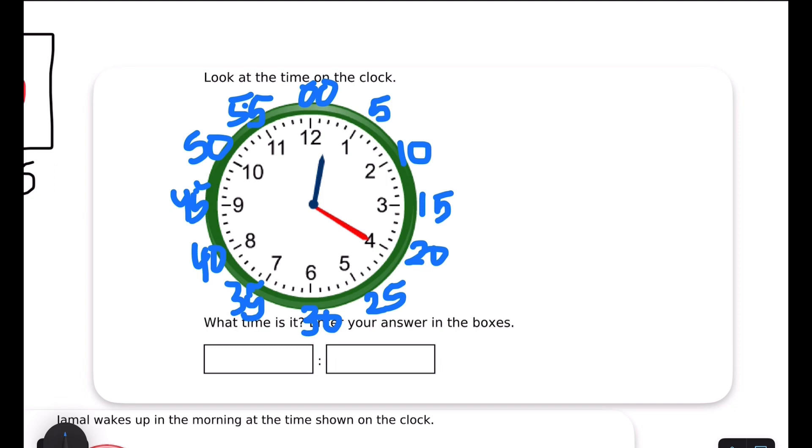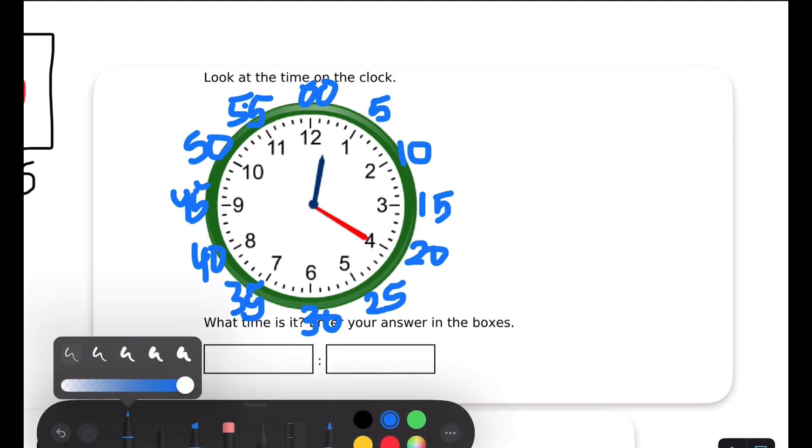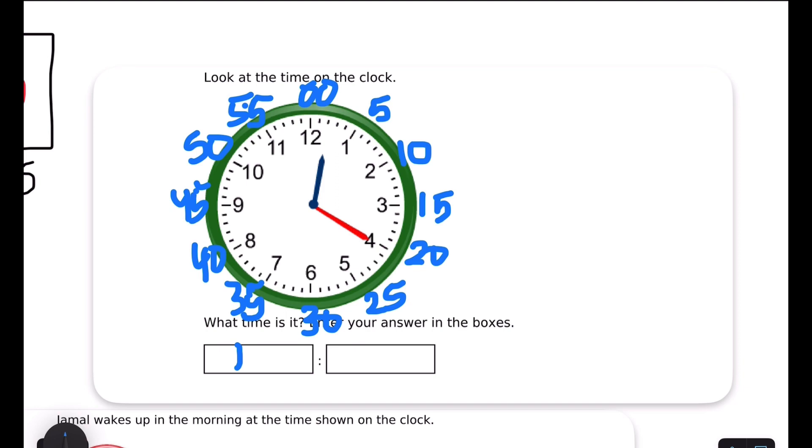And now I remember that we're going to write our hour first. Our hour is the short hand, and because the short hand is in between 12 and 1, that means that it's actually 12 o'clock. You always take the time before. Between 12 and 1, you take this one. And now the long hand is so long that it counts up by fives and it's pointing to 4, that means it's 12:20.